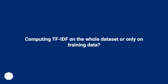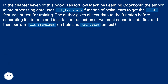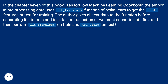Should we compute TF-IDF on the whole dataset or only on the training data? In Chapter 7 of the TensorFlow Machine Learning Cookbook, the author uses Scikit-Learn's fit_transform function on all text data before separating it into train and test sets. Is this correct, or must we separate the data first, then perform fit_transform on the training set and transform on the test set?